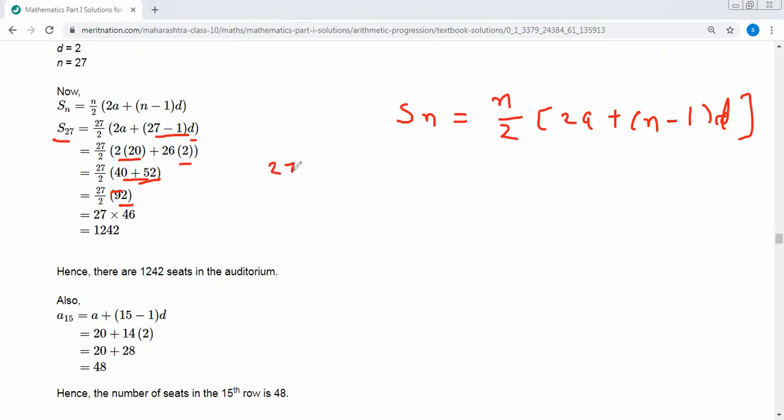27 by 2 into 92. Divide 92 by 2. 2 into 2 is 1, 2 into 4 is 2, 2 into 6 is 3. 27 into 46 value is 1242. Therefore, there are 1242 seats in the auditorium.